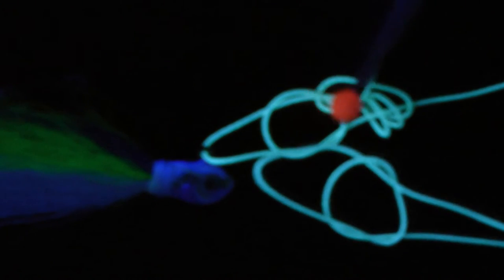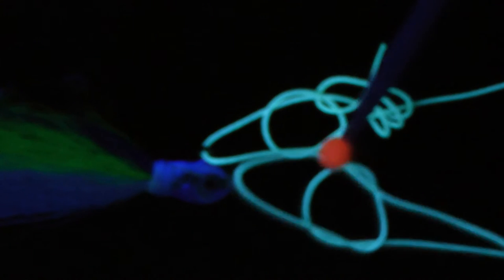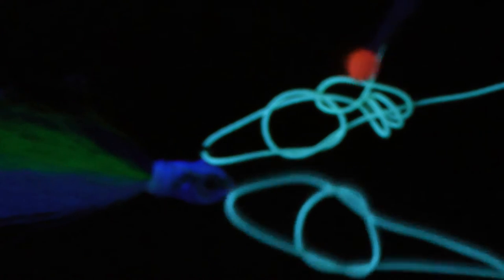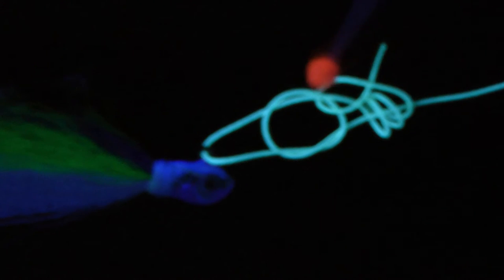You run the tag in through the eye of the lure, back on the back side of the loop, and then back up and around the main line.